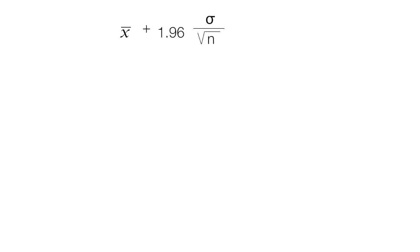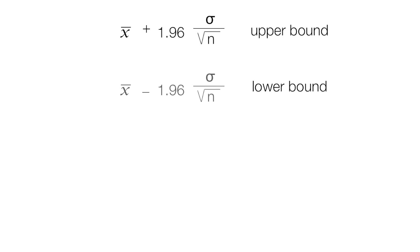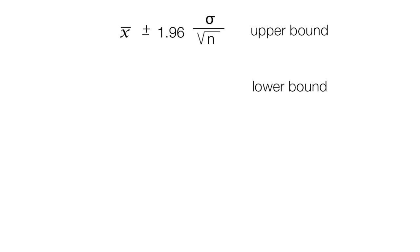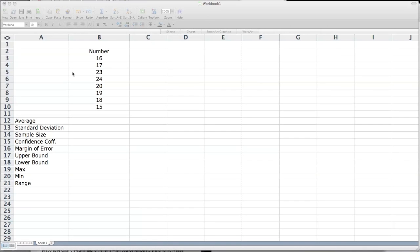The equation for a confidence interval looks like this. This is the upper bound, and I'm going to discuss this in detail, but these are the equations, and this is the lower bound equation. Typically, these equations are combined and form one equation with a plus and a minus.